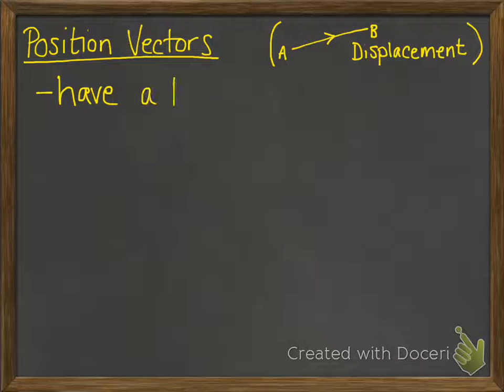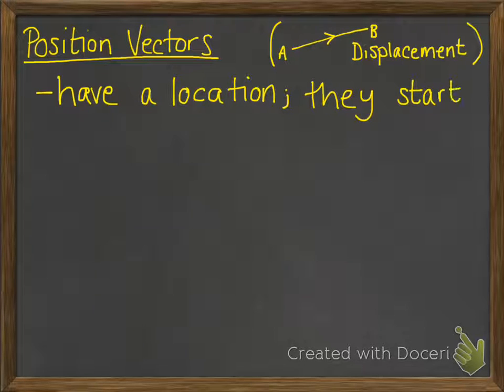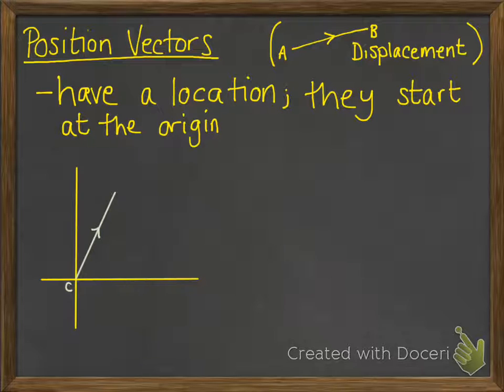Position vectors are a little bit different because they have a location. And they start from the origin, so they look like this.